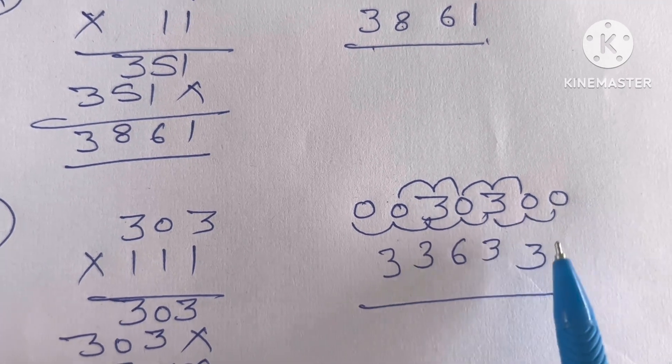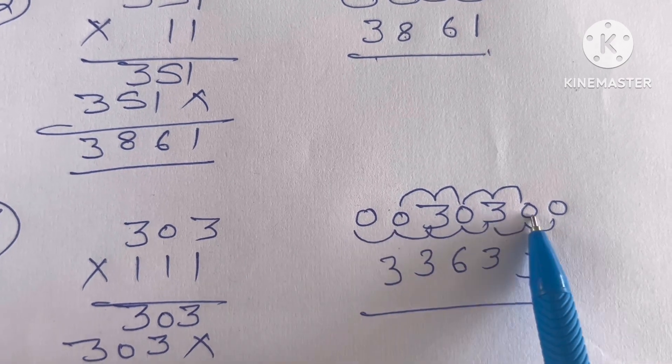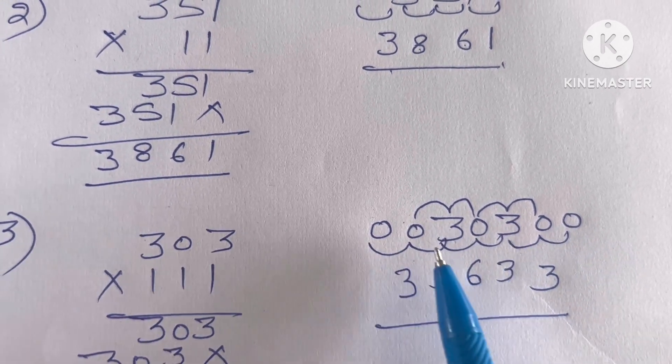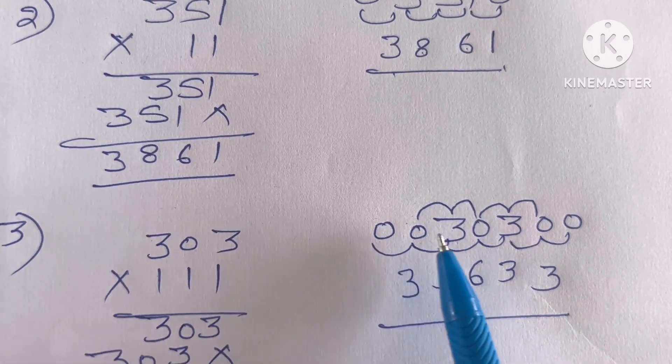3 plus 0 plus 0, 3. Then again start from the next number. 0 plus 3 plus 0, 3. Then 3 plus 0 plus 3, 6. 0 plus 3 plus 0, 3. 0 plus 0 plus 3, 3.